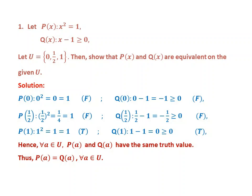P(0) is found by substituting 0 into the open proposition P. We have P(0): 0² = 0, and 0 = 1, which is false. Also, Q(0): 0 - 1 = -1, and -1 ≥ 0, which is false. Therefore, at x = 0, P and Q have the same truth value: false, false.